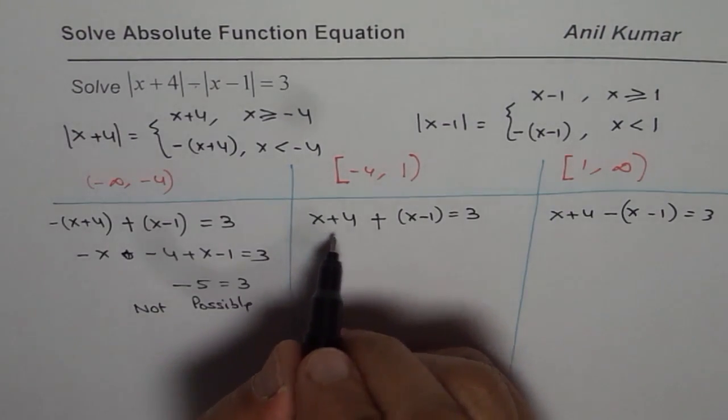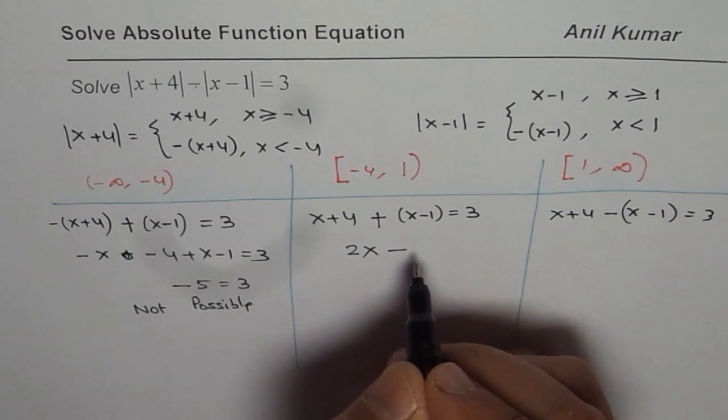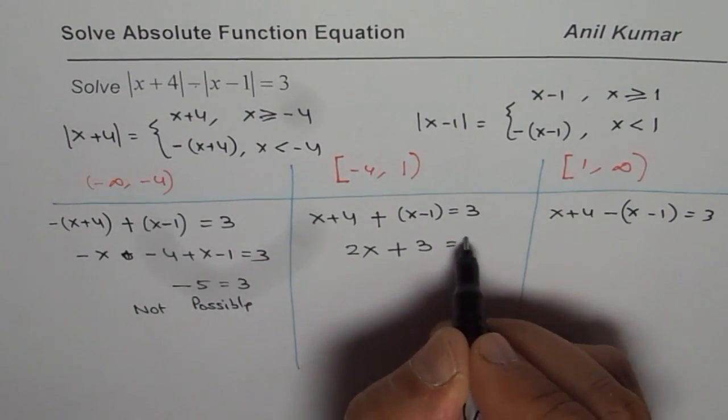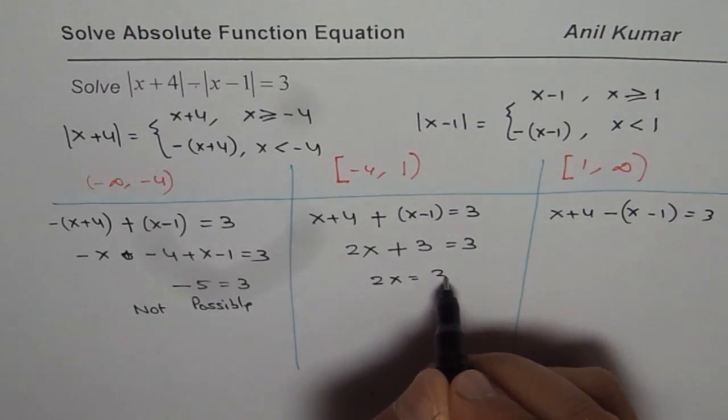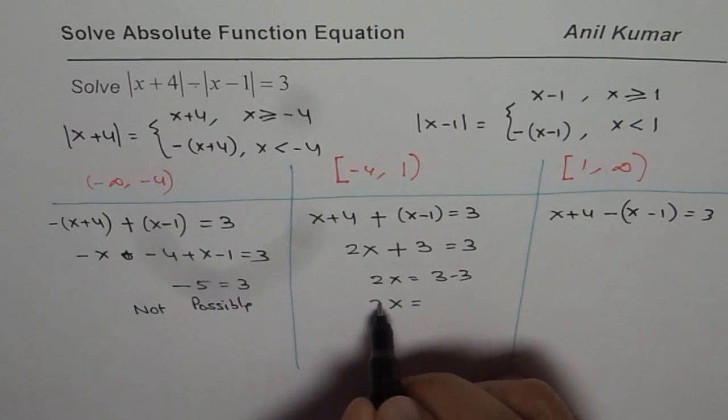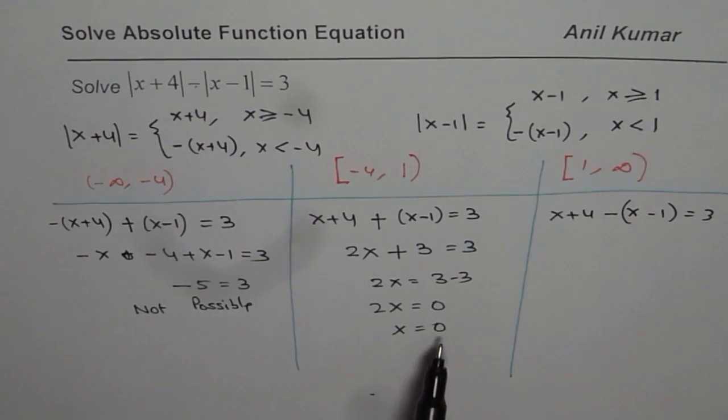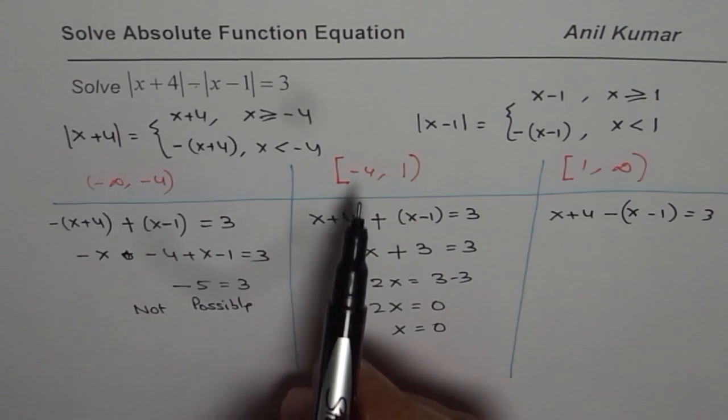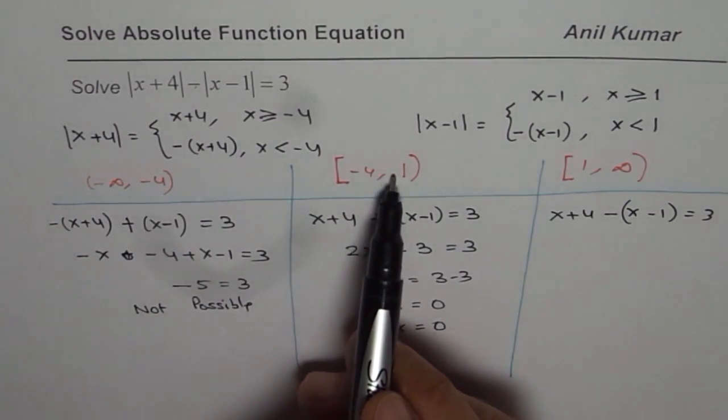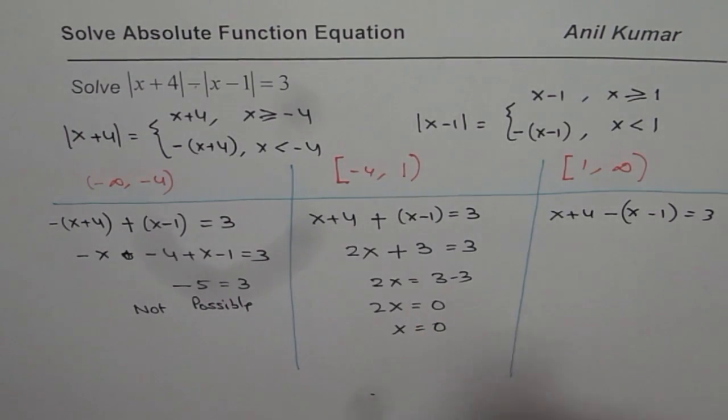For the second interval, combining x terms gives 2x+3 = 3. So we have 2x = 0, and x = 0. x = 0 is the solution within this interval, and we see that 0 is a valid point in this interval, so that is fine.